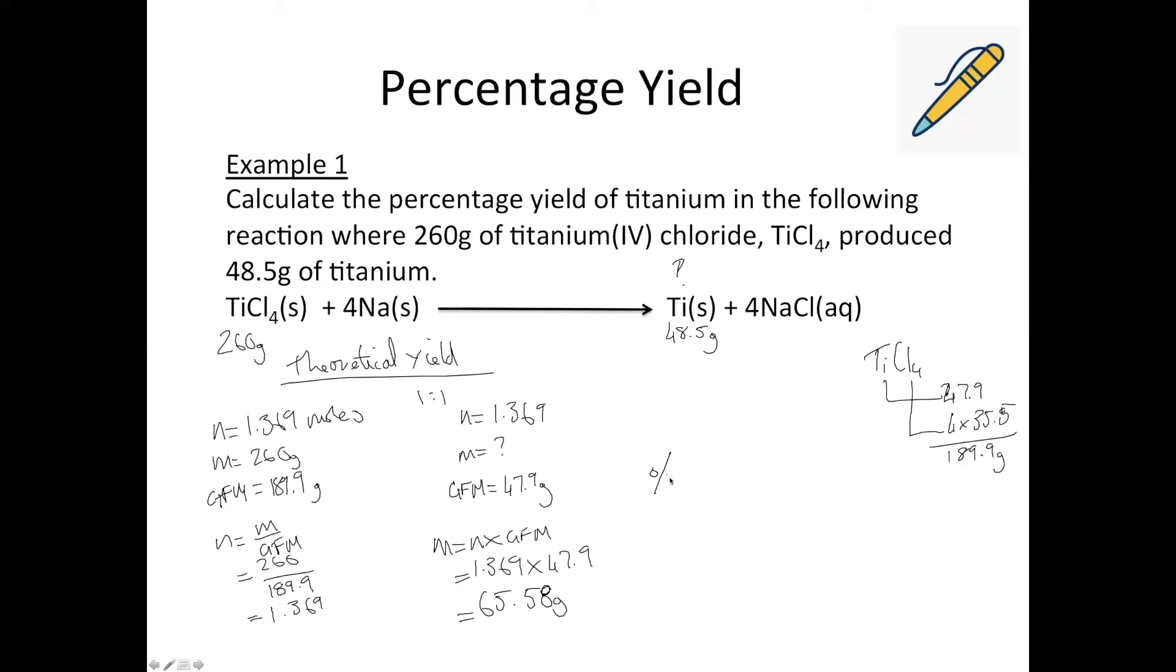So then using the percentage yield equation is exactly the same, regardless of how you calculate the theoretical yield. So it's actual over the theoretical times by 100. Don't forget the times by 100. So our actual yield was this 48.5. The theoretical is our 65.58 and times that by 100. You should get the same percentage yield as before. So 73.96%. So this is exactly the same. It's just a different method for calculating the theoretical yield. So for the rest of the examples, I'll just do it by the direct proportion way, which was the first way I did it. But you're free to do it whichever way you want for your own calculations.